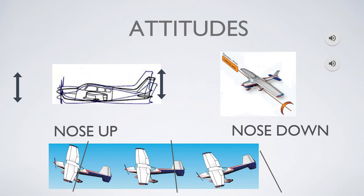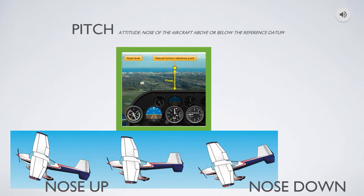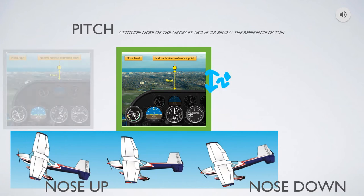Now that we know what cruise is, when we talk about a nose up or nose down attitude, we're really talking about an attitude in reference to that cruise attitude. If I say nose down, I mean nose down relative to cruise. If I say nose up, I mean nose up relative to cruise. Visually, in a nose up attitude you'll see a lot less ground and a lot more sky, while in a nose down attitude you'll see a lot more ground and a lot less sky.